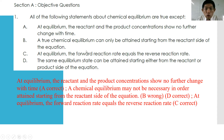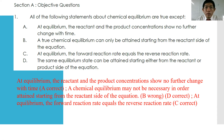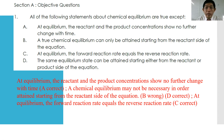At equilibrium, the forward reaction rate equals the reverse reaction rate — which is true. We define dynamic equilibrium as when the reaction is ongoing, the concentration of reactants and products remain constant, at the rate of forward reaction equals to the rate of backward reaction. That is how we define a chemical equilibrium.